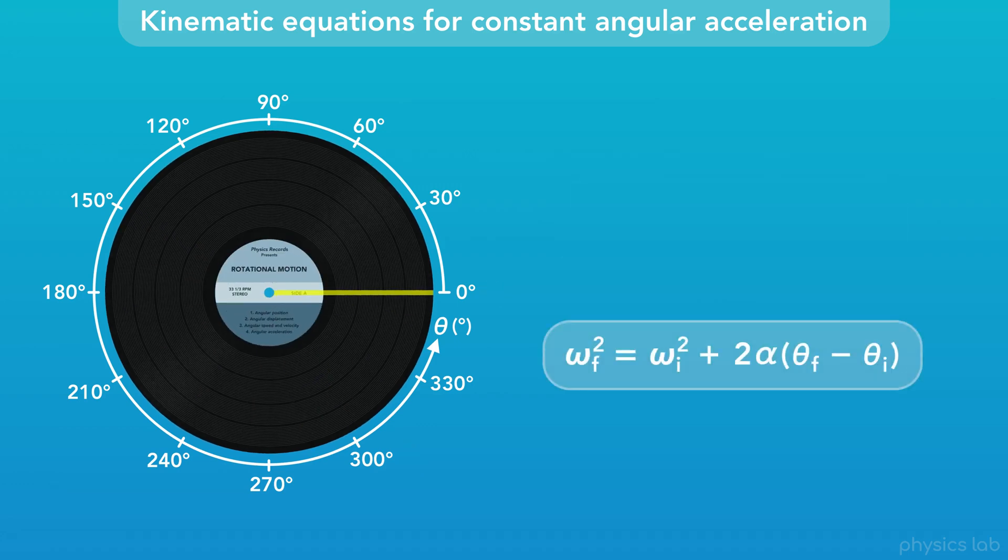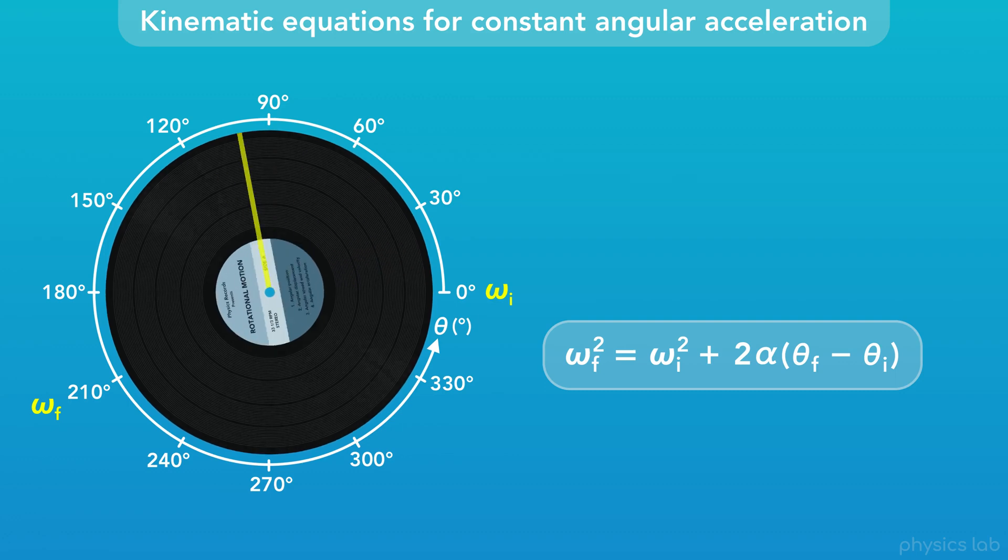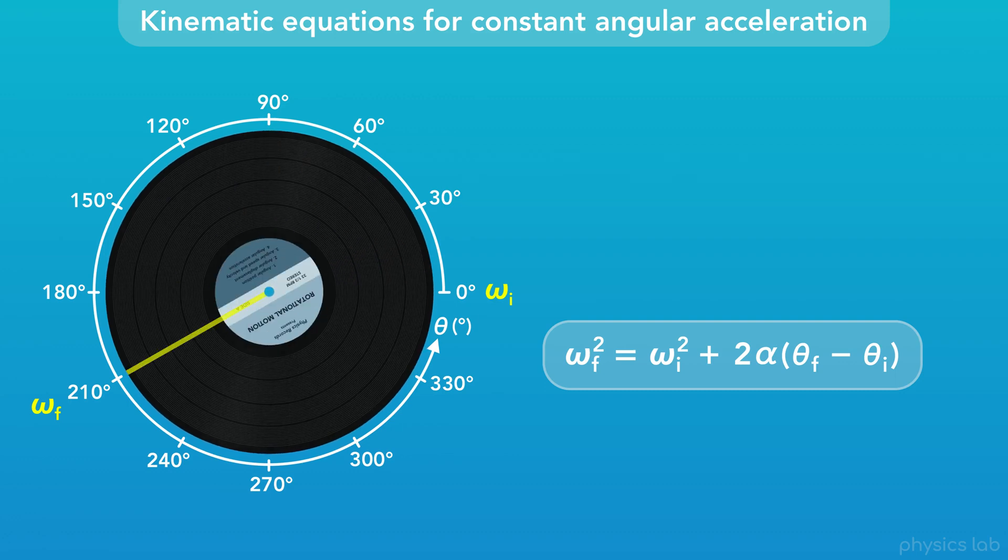The second equation says that the final angular velocity squared equals the initial angular velocity squared plus 2 times the angular acceleration times the angular displacement, or the final angular position minus the initial angular position. This equation can help us find the final angular velocity of a rotating object after it accelerates over a given angular displacement.